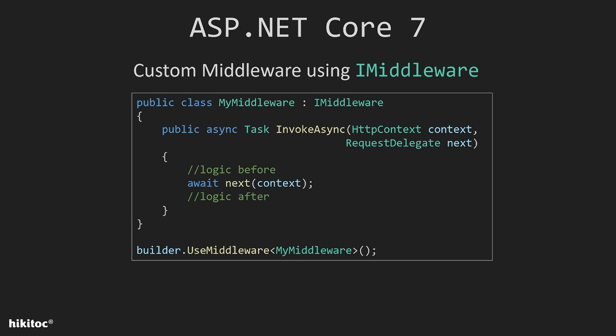The first approach is to create a class that implements the middleware interface, as demonstrated on your screen. The middleware interface defines a single method called InvokeAsync, which is responsible for handling the middleware logic. This method takes in an HTTP context object and request delegate, representing the next middleware in the pipeline. It performs its operations on the incoming request and optionally calls the next middleware to continue the pipeline execution.